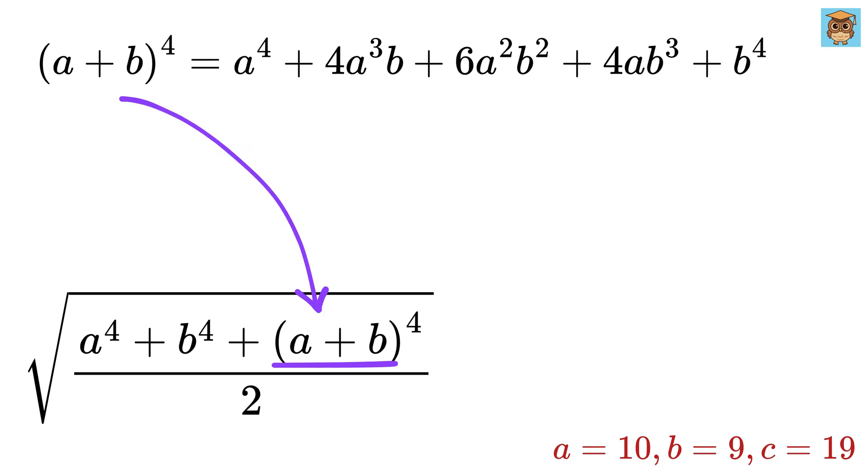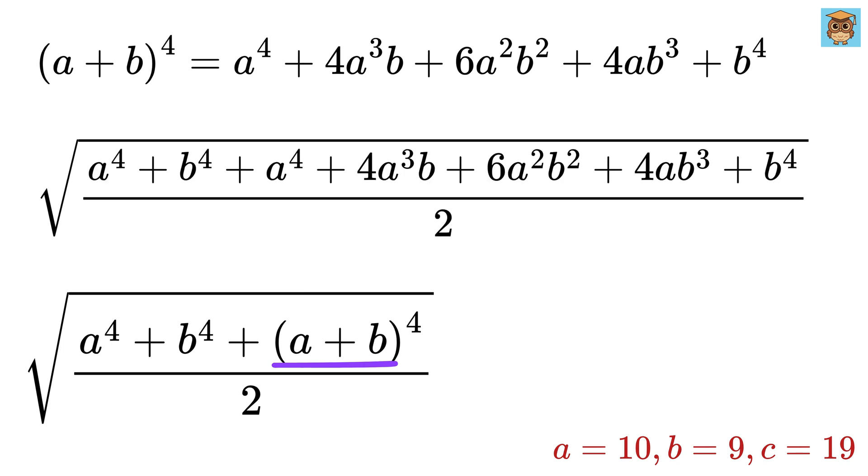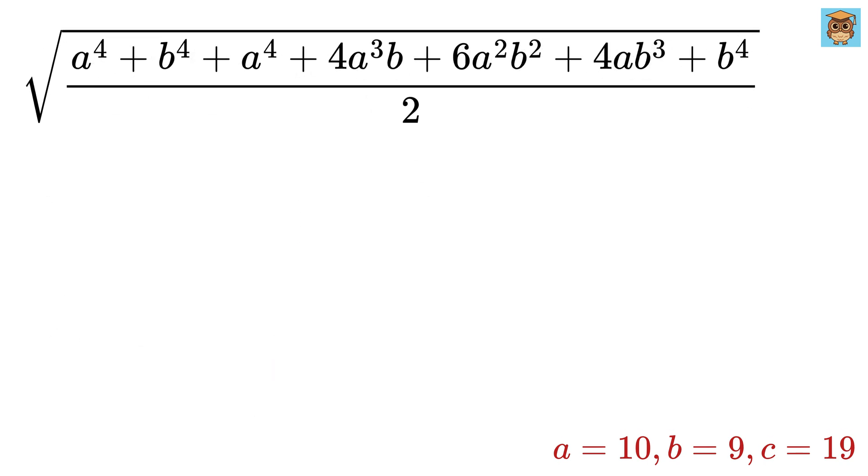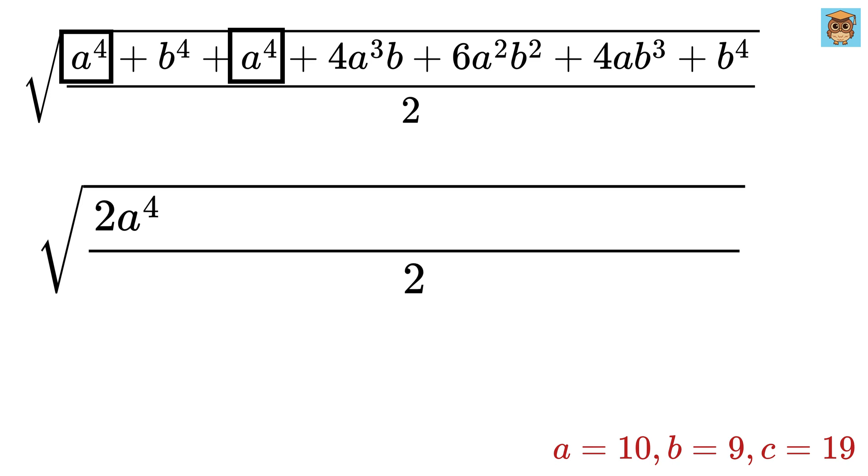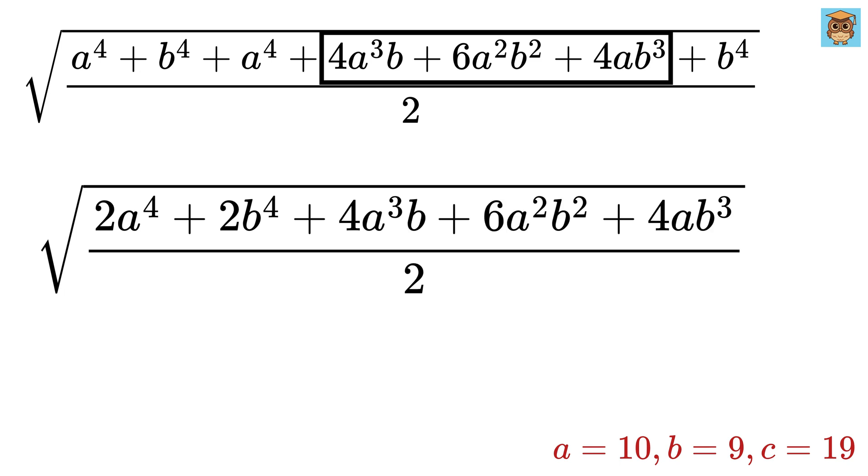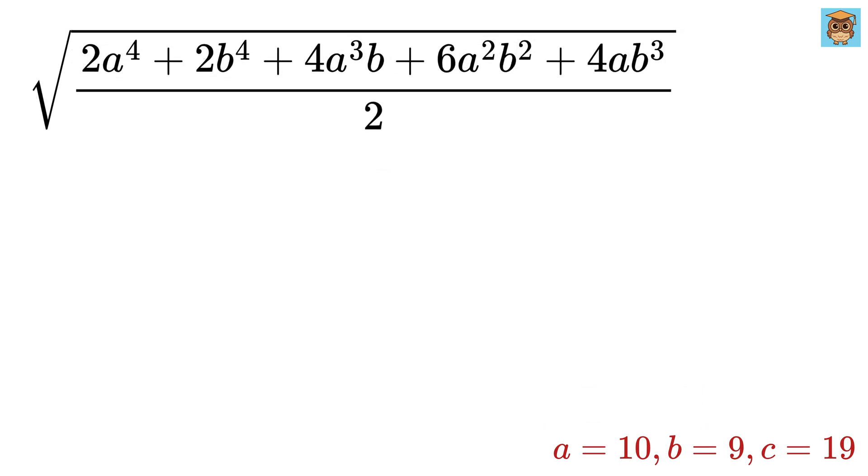So put this A plus B whole to the 4 here inside the square root to get this. Let us simplify this expression. This gives us 2 times A to the 4th, and this gives us 2 times B to the 4th, and the other terms remain the same. So we now have this.